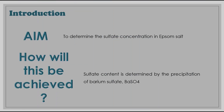Welcome to experiment A4. The aim of this experiment is to determine the sulfate concentration found in epsom salt. This will be done by gravimetric analysis, which is a quantitative method for accurately determining the amount of a substance by precipitation from an accurate solution. In this experiment, the sulfate concentration is determined by precipitation with barium to form barium sulfate.